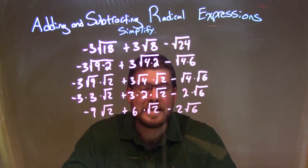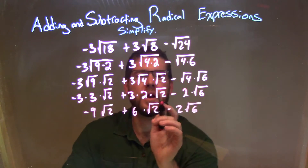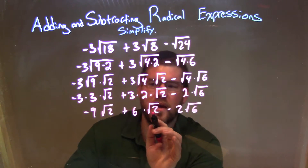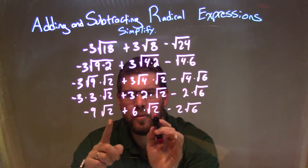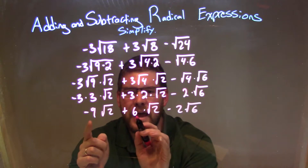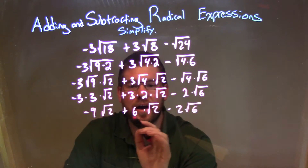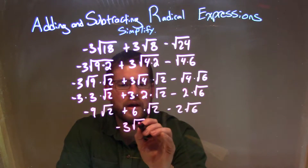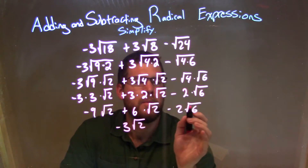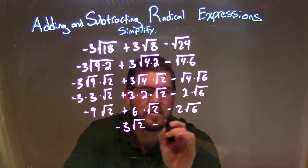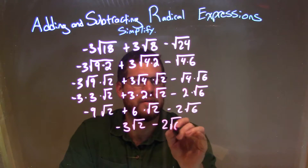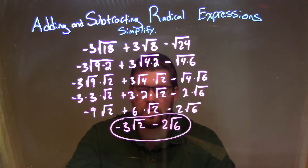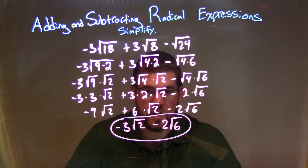So now we have to combine like terms. The ones we can combine are when the square roots are the same. We can combine the first two and look at the numbers out in front: negative 9 plus 6 is negative 3, and then the square root of 2 comes down. Since this one is the square root of 6, there's nothing else that has that, so it stays separate: minus 2 times the square root of 6. Our final answer is negative 3 times the square root of 2 minus 2 times the square root of 6.